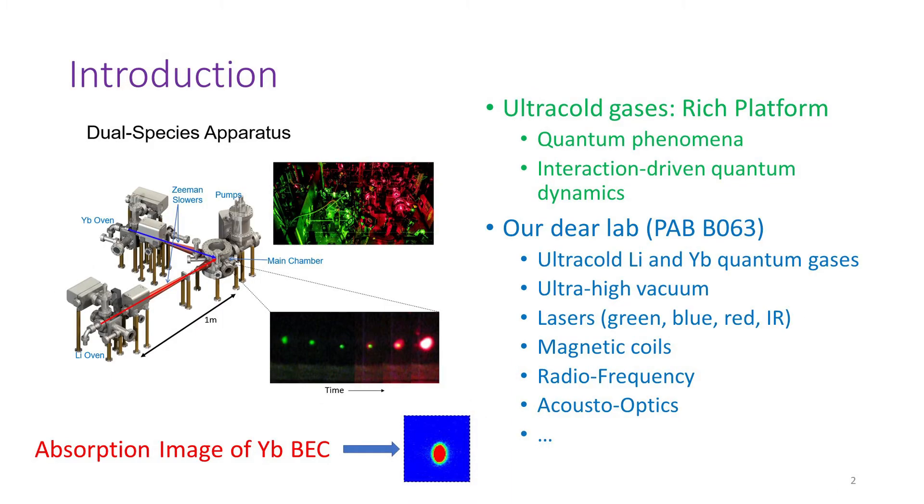On the left, you can see a brief overview of our dual-species apparatus, where ytterbium vapor and lithium vapor are slowed down by Zeeman slowers, and then loaded into the magneto-optical trap inside our ultra-high vacuum chamber. Several magnetic coils are also wrapped around the ultra-high vacuum chamber to provide the magnetic field and gradient necessary for our experiments. You can also see a picture of our red and green lasers in action, as well as a series of pictures showing our dual-species MOT, green for ytterbium and red for lithium. At the bottom, you can see an absorption image of ytterbium Bose-Einstein condensate, which is captured by our Andor CCD camera and processed by our data analysis software Igor.